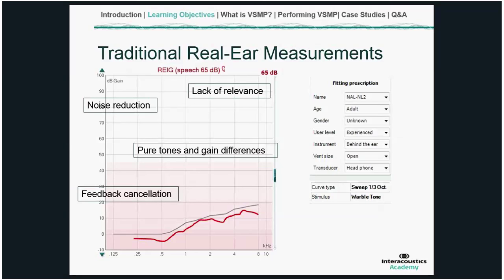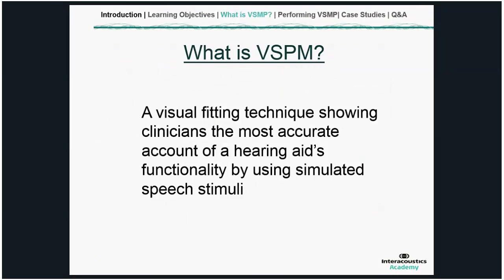As clinicians, at the end of doing a traditional real ear measurement, we may feel that it's left us with a feeling that it was a little bit of an arbitrary task. What is that really showing me? There's really no comparison to how the hearing aid is functioning in the client's day-to-day life. We're also unsure about how that noise reduction or feedback mechanism is working at the time, and how much improvement in speech is my client receiving when we're not using a speech-based stimulus. And this really takes us on to performing visible speech mapping.